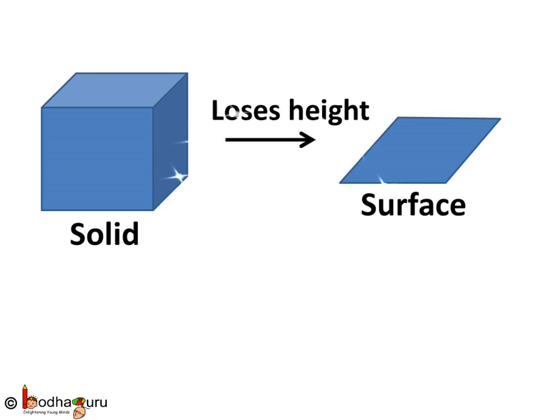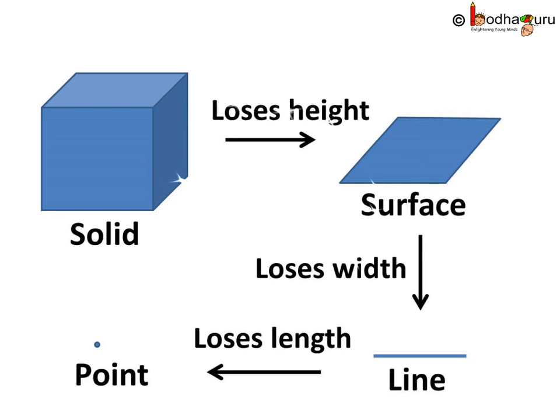A surface has two dimensions, namely length and width. A line has only one dimension, that is length. And a point has no dimensions.